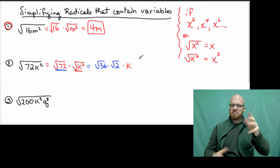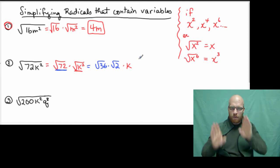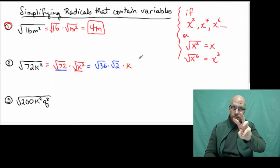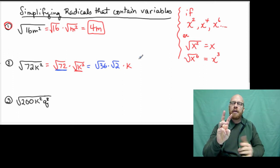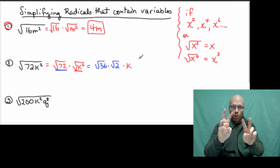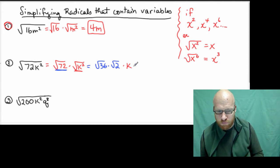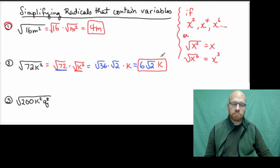Now square root of k squared is k, like we just talked about with x or m. Now looking at the square root of 36 times the square root of 2, we can see the square root of 36 is 6. And multiply that with the square root of 2 times k. And that really is our answer.